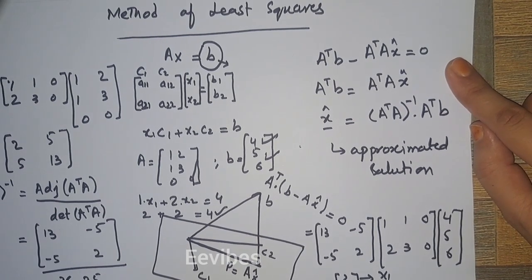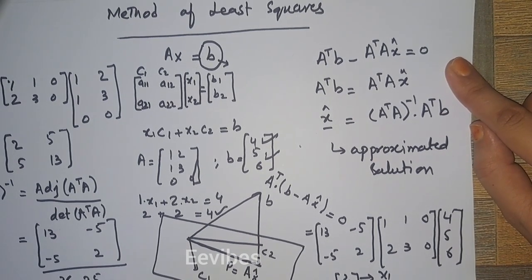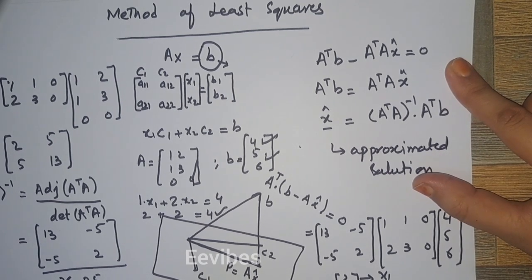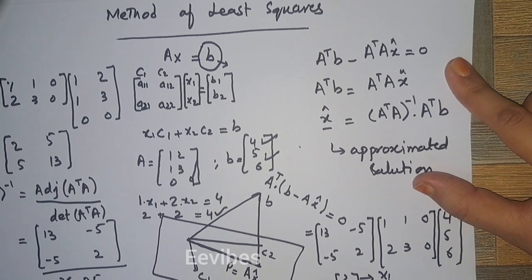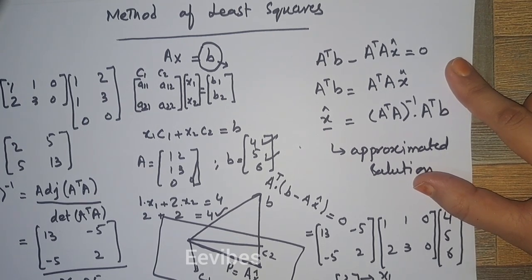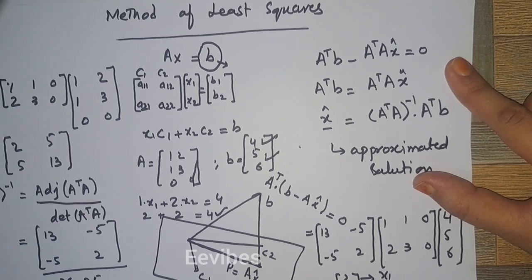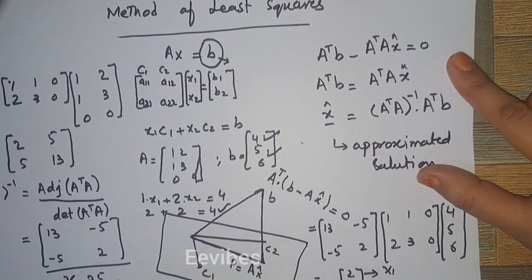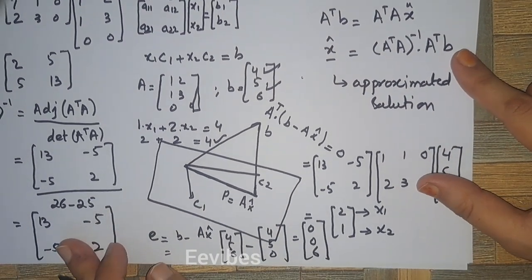Since error is equal to B minus AX̂, so B, which is equal to [4, 5, 6], minus AX̂ is actually equal to [4, 5, 0]. So the error is equal to [0, 0, 6], which is called the least square error.